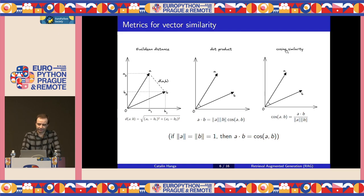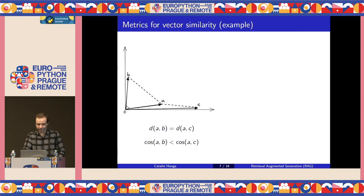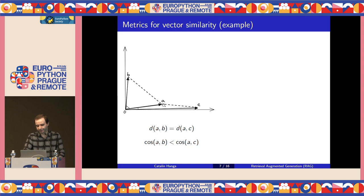The choice of similarity metric is quite important because it can have a direct influence over the final results of the semantic search. Consider the following example: we have three vectors A, B, and C, and we would like to know which one is closer to A. If we use Euclidean distance, the distance between A and B is the same as between A and C, so both are equally close to A. But the angle between A and C is much smaller than the angle between A and B, so if we use cosine similarity, A is closer to C than to B.